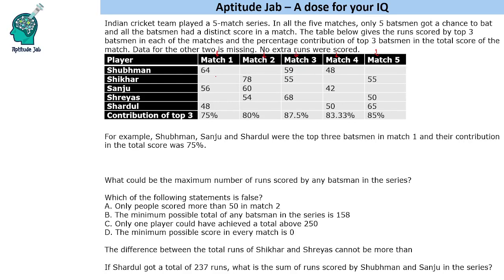Let us complete the table. Adding the top three scores gives 168, which is 75%, so the total score is 224. Similarly, in match two, the sum is 192, which is 80%, so the total is 240. For match three: 59 + 55 + 68 = 182, and 87.5% equals 7/8, so the total is 208. For match four, 90 and 140 — 140 is 5/6 of the total, so the total is 168. For match five, 120 + 170... wait, that portion is 85%, so the total is 200.